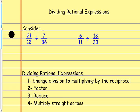In this lesson we're going to be looking at dividing rational expressions. Just like multiplying rational expressions, we treat these the same way we would treat any type of fraction. If I'm dividing two fractions with numbers, I would change it — instead of dividing two fractions, I change it to multiplying by the reciprocal. So I'm going to change this to multiplying by 36 over 7.